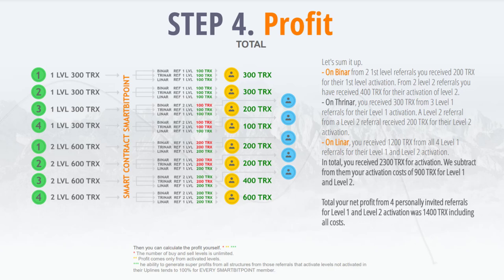Referral number 3 paid 600 TRX for level 2 activation. In binary, you get 200 TRX because they are your second-level referral. In trinary, you get nothing — your first-level upline gets 200 TRX. In Lina, you get 200 TRX. In total, you get 400 TRX. Total income: 1700 TRX.